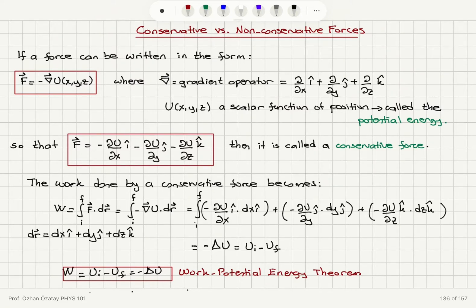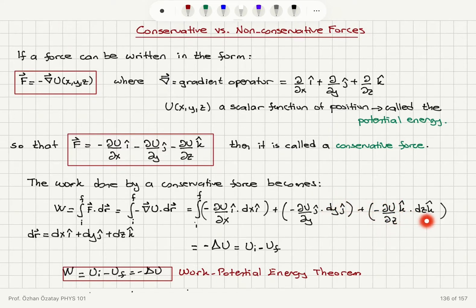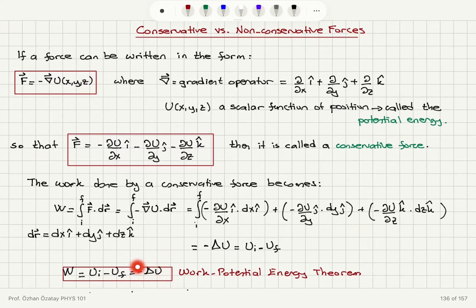For a conservative force, the work done is the integral from the initial to the final position of F dot dr. Substituting F = minus gradient of U and expanding the dot products, we find that this equals minus the change in the potential energy function, which is U_i minus U_f. So the work done by a conservative force equals the initial potential energy minus the final potential energy, or minus delta U. This is known as the work-potential energy theorem.